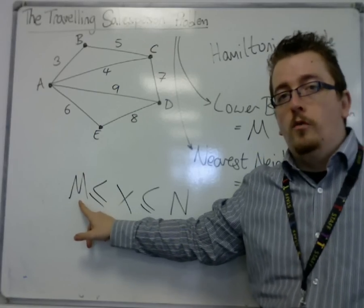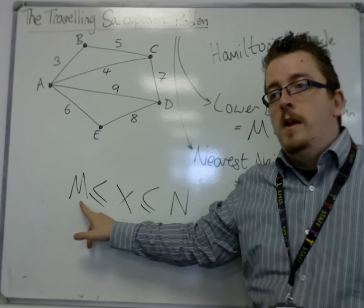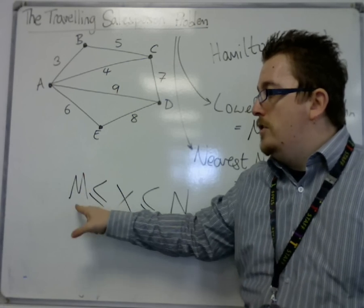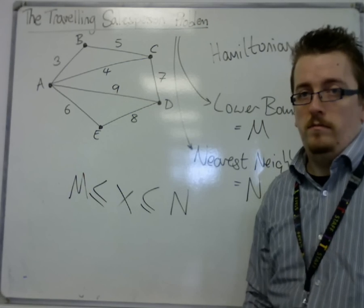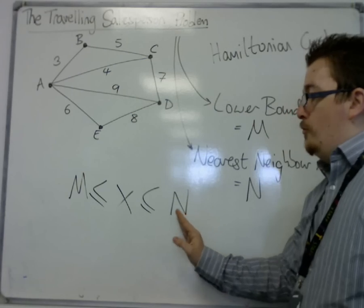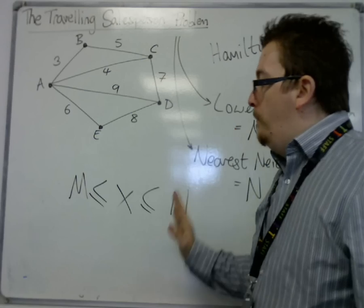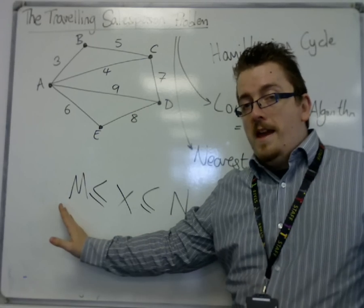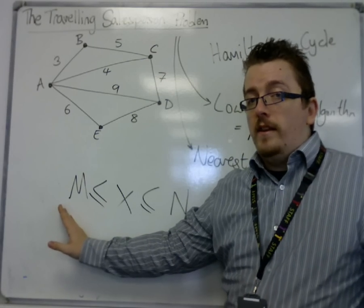There will be no cycle that will be shorter than this value, but that cycle may not actually exist. So we may well be able to improve on N, but the M may not actually exist.